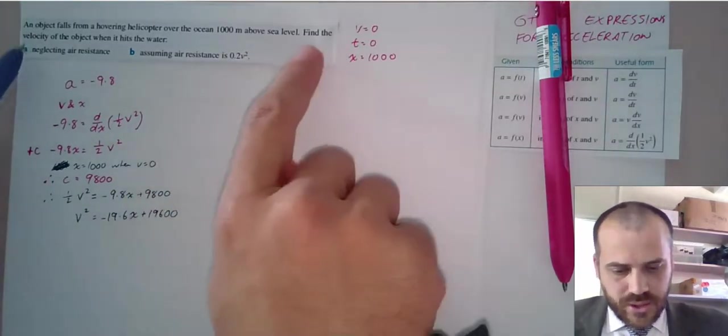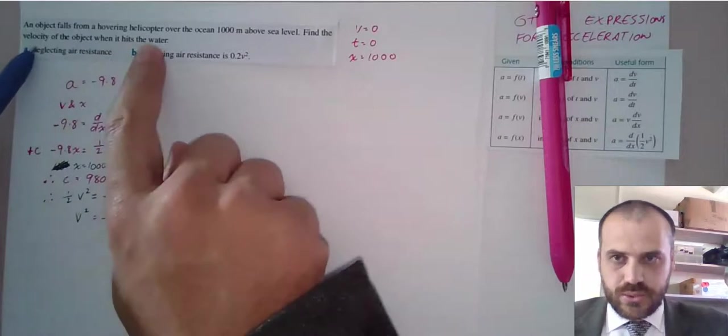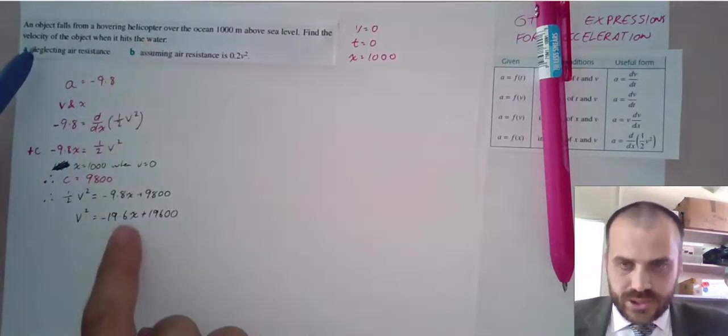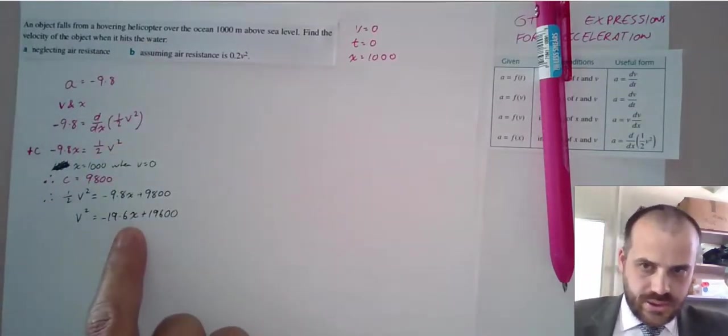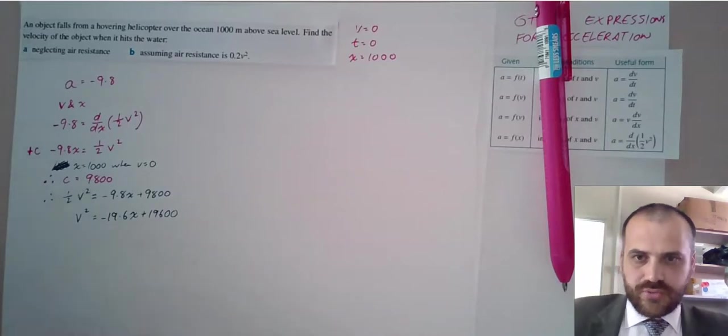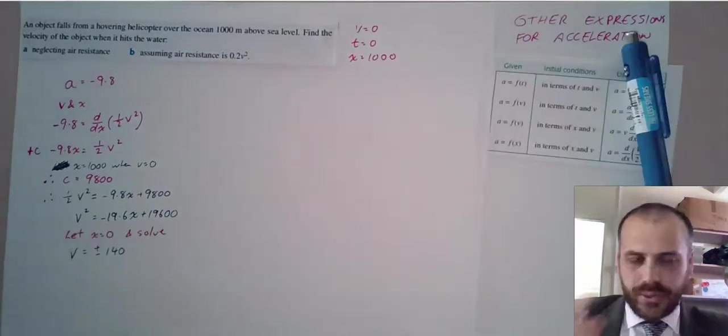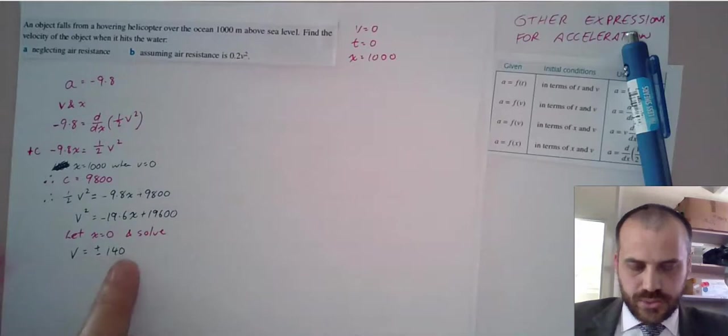Now, because we have an equation in terms of V and X, we can now figure out, find the velocity of the object when it hits the water. When it hits the water, its displacement will be zero. It's hit the ground. So let's just solve this when X equals zero. When I solve this, I get plus or minus 140.